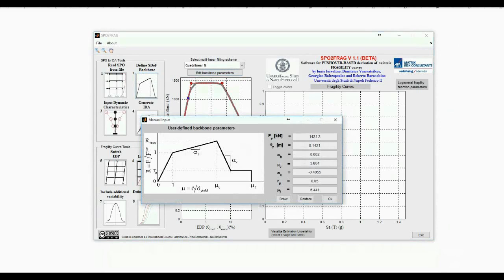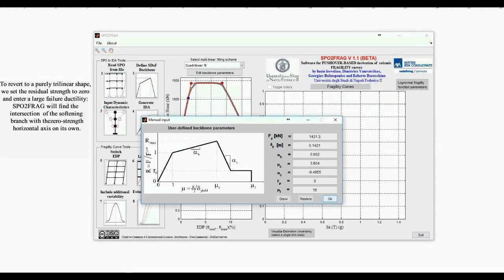By pressing the button Edit Backbone Parameters, the user can intervene on the backbone curve. For example, let's get rid of that small residual strength returned by the solution to get a purely trilinear shape. Note that the blue dot appearing on the plot is the last point that the program finds the original pushover curve to be purely linear.